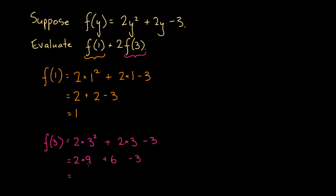So here 2 times 9 is 18, so we're going to have 18 plus 6 minus 3. 18 plus 6 is 24 minus 3, that's 21. So we found that f of 3 is equal to 21.